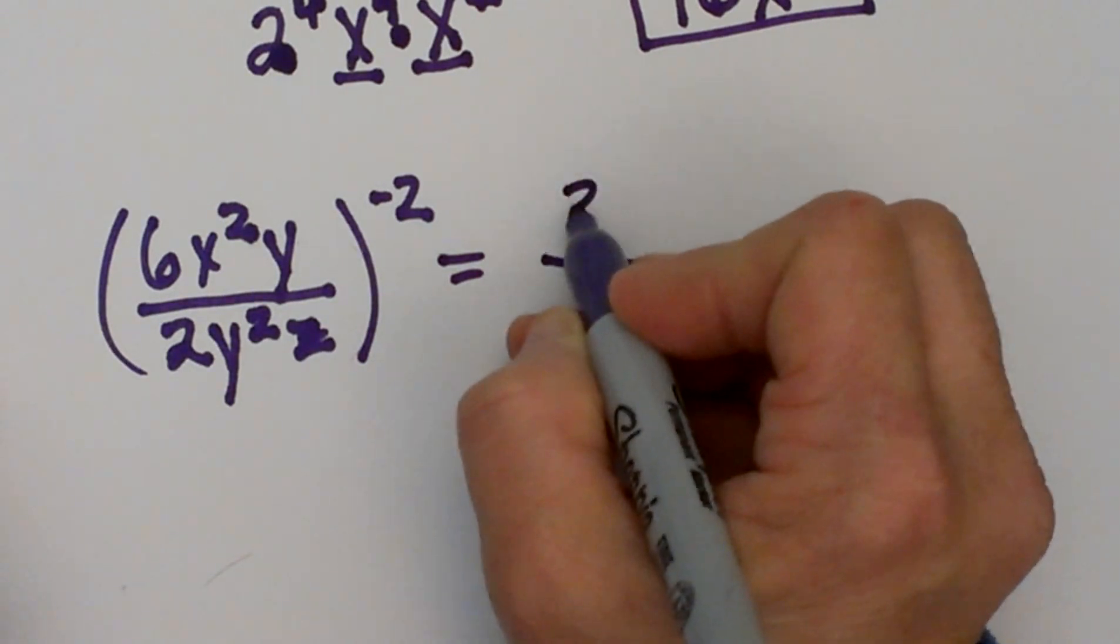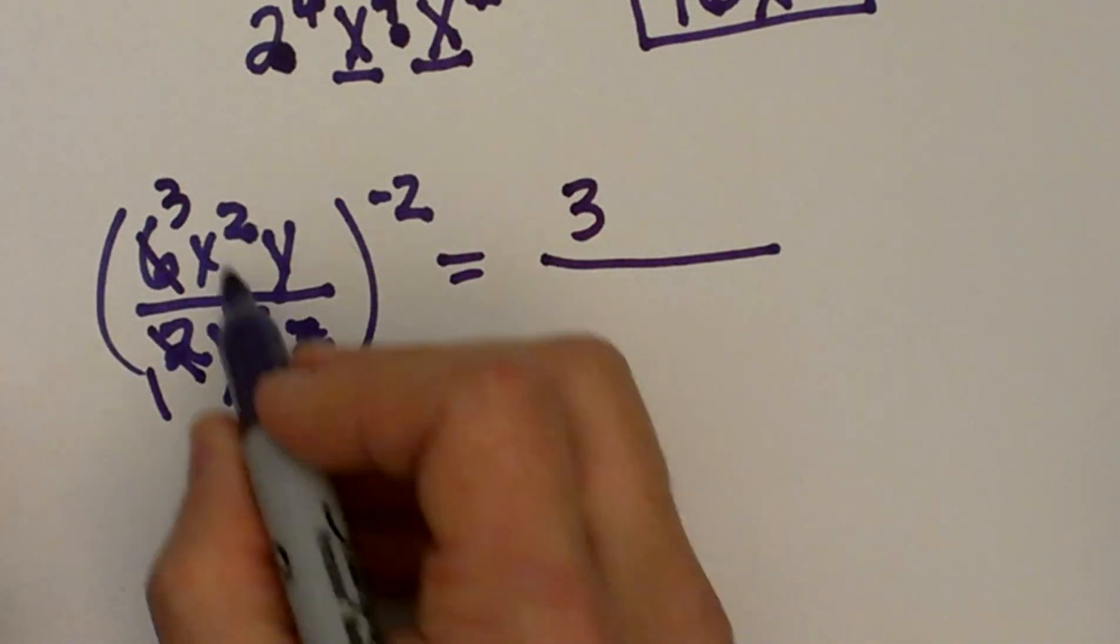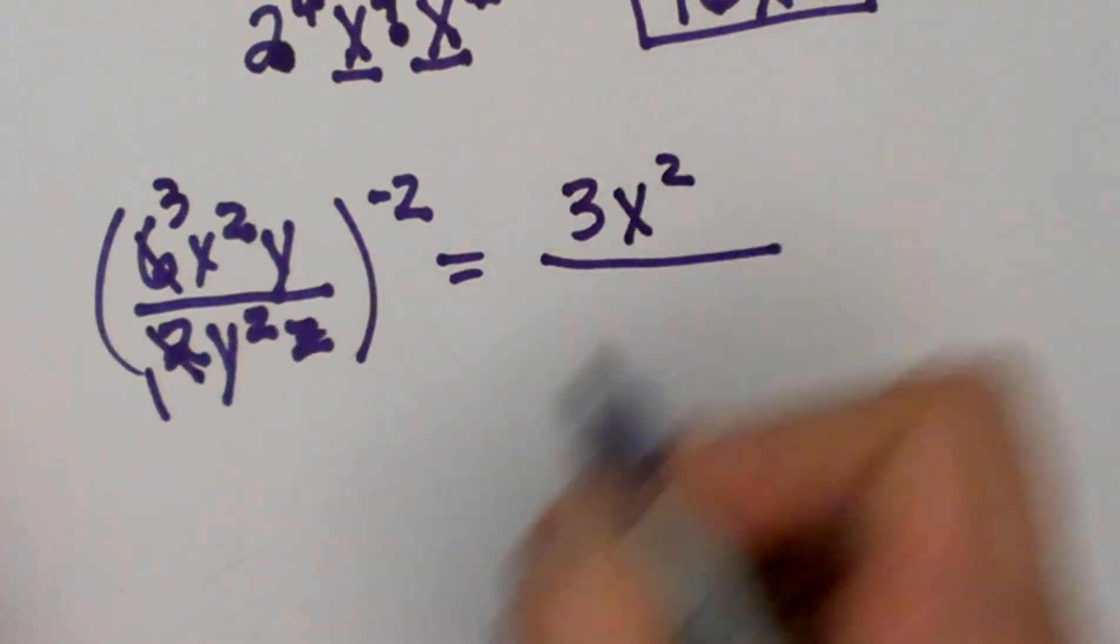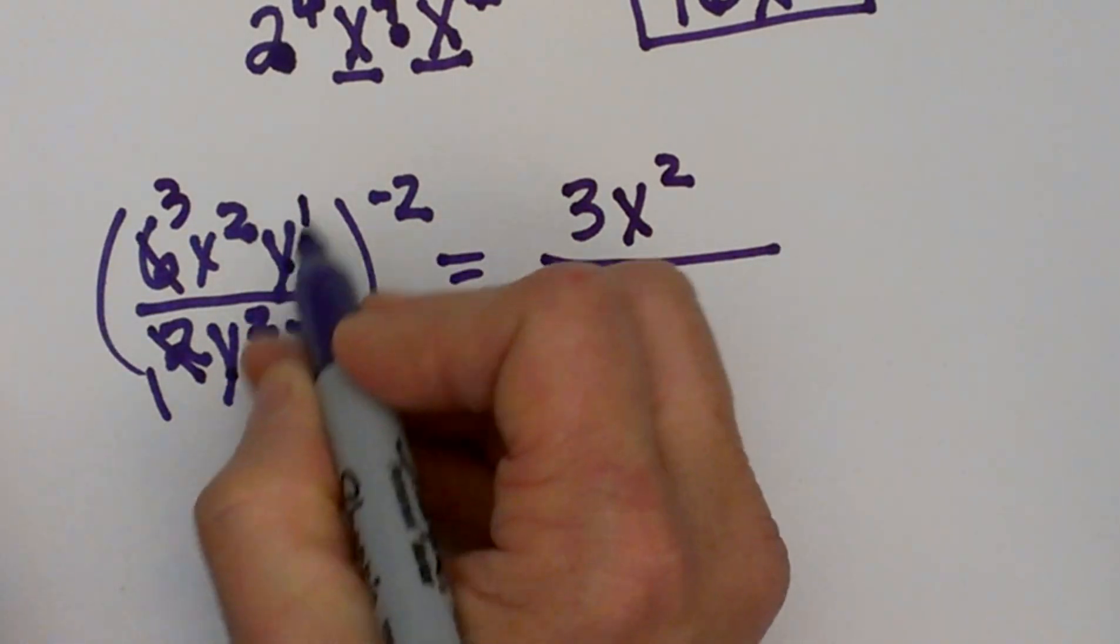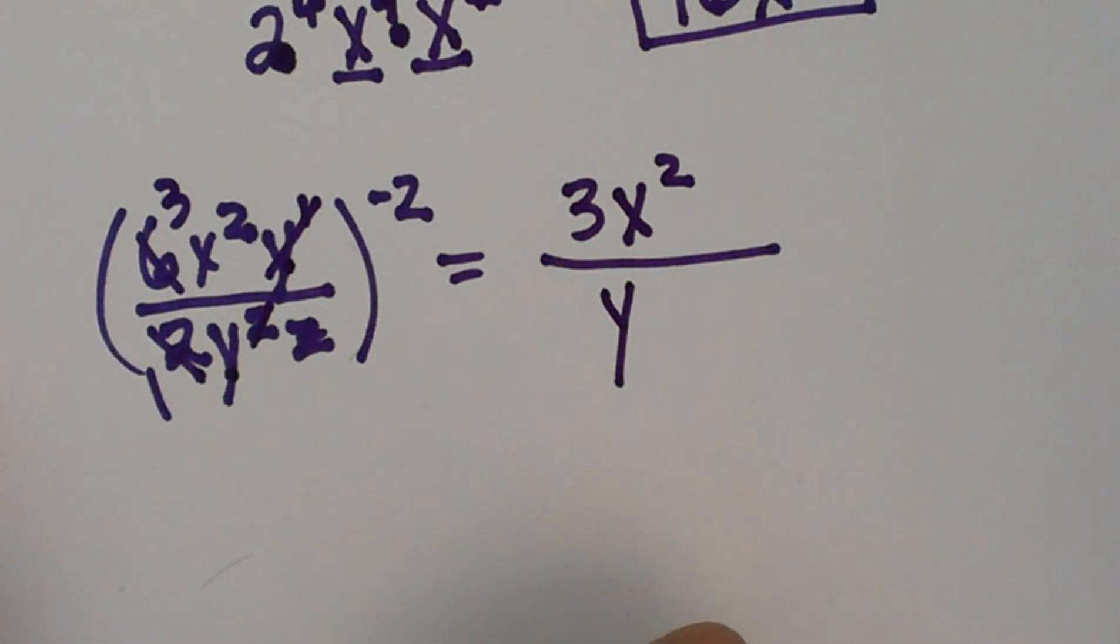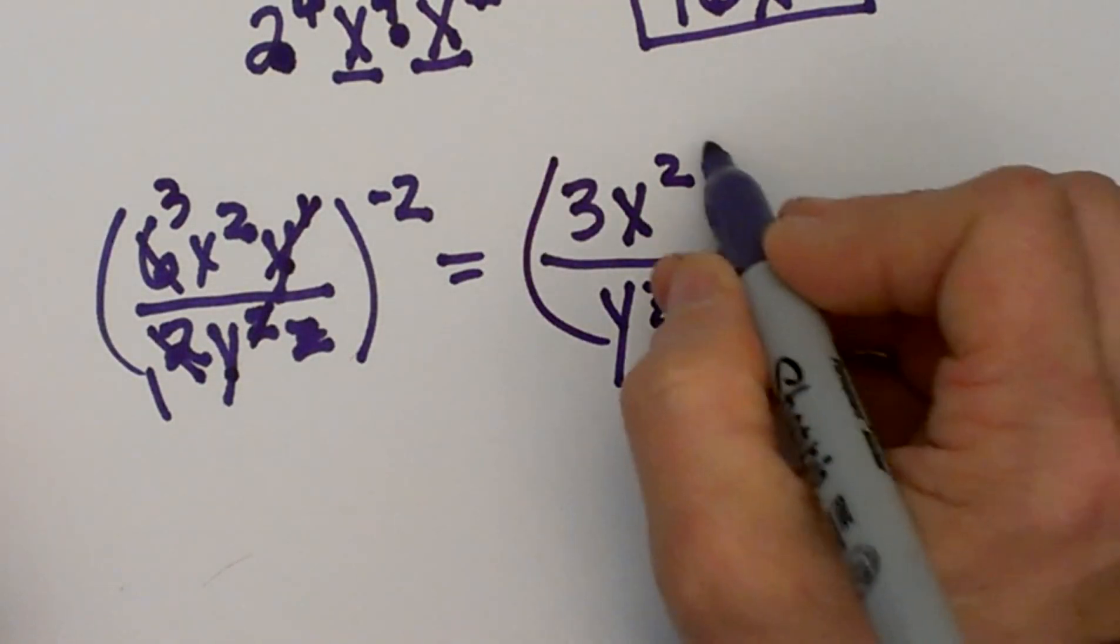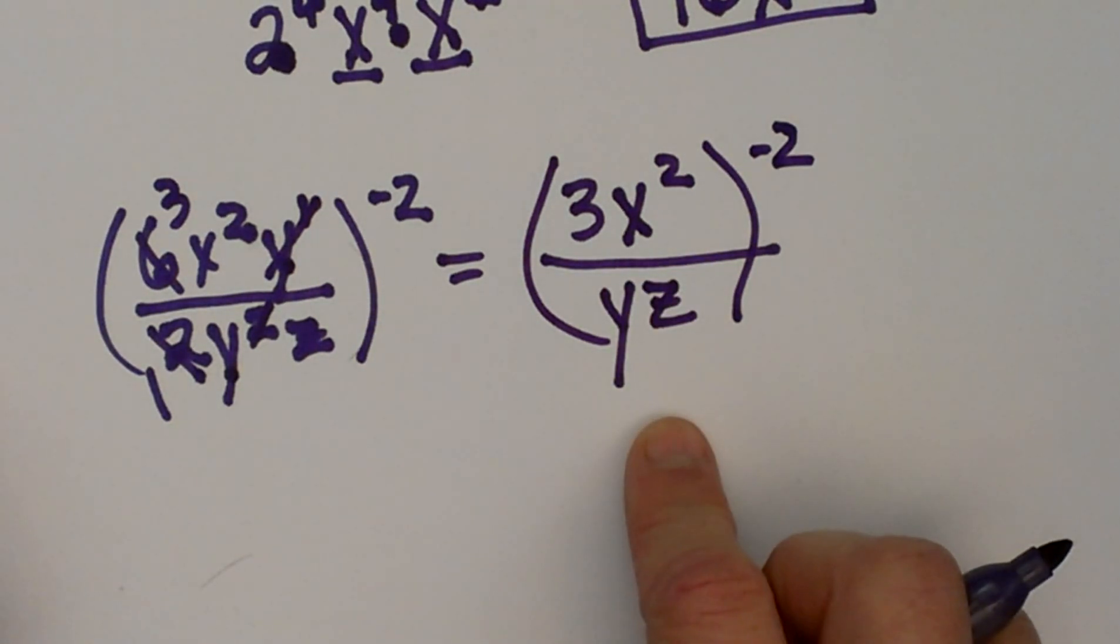So that's going to give me 3 because that's going to cancel out - 2 goes into 6 three times. I have an x^2, well there's nothing to cancel that with so I'll just bring it over. I have y and then y^2. Well I can cancel one of these y's with one of those, so I'm left with just y in the denominator and I have a z down there. Then all this is going to be raised to the negative second. Now that's a little bit easier because I've gotten rid of duplicates.